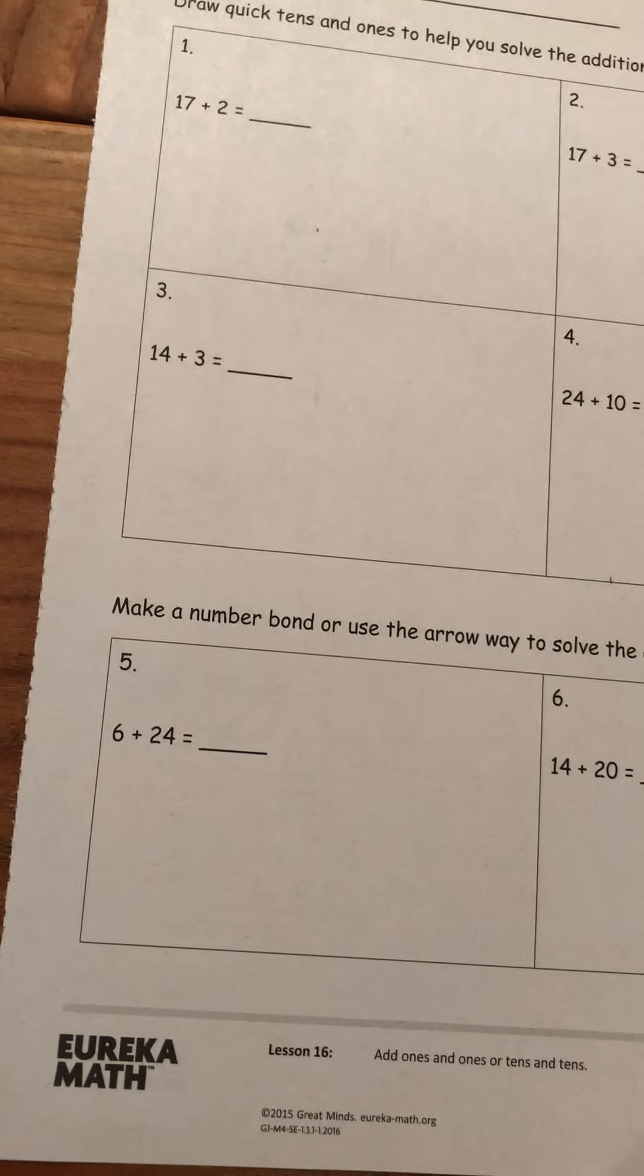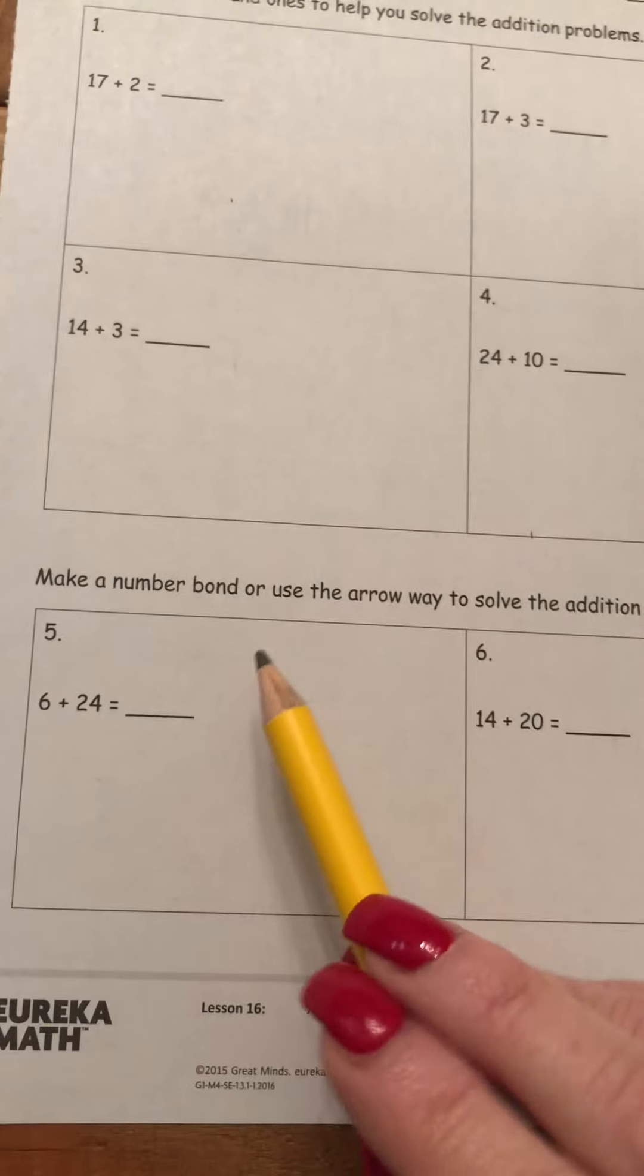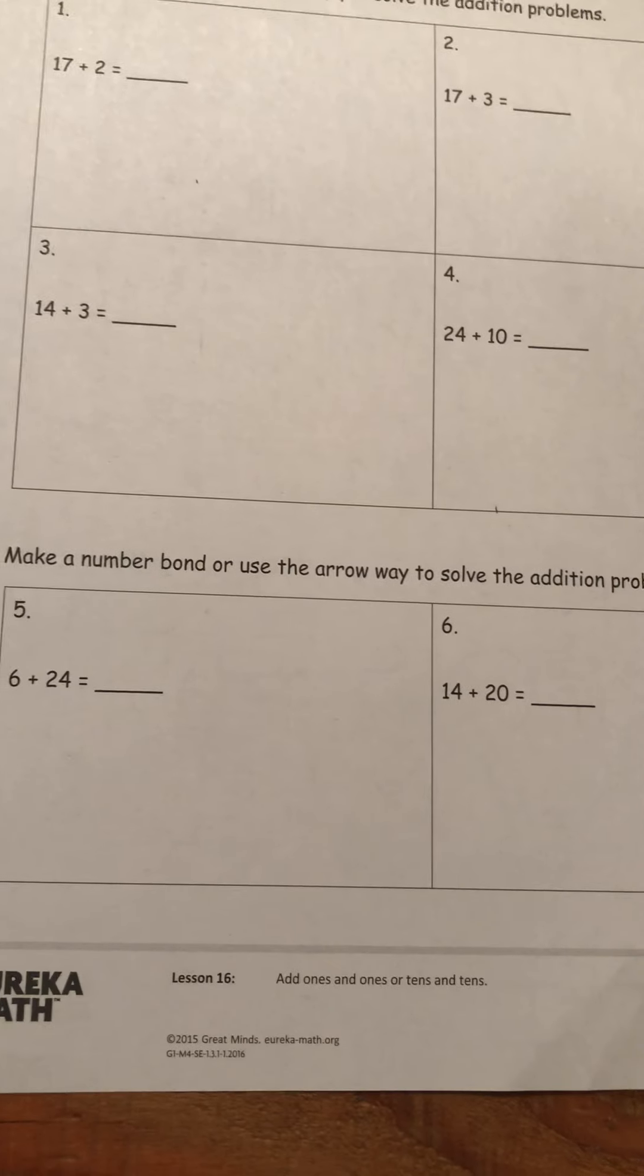And that's all you have to do. At the bottom of the page on your homework, it says make a number bond or use the arrow way. If you want to keep using quick tens, that's up to you. And the back page is all matching.